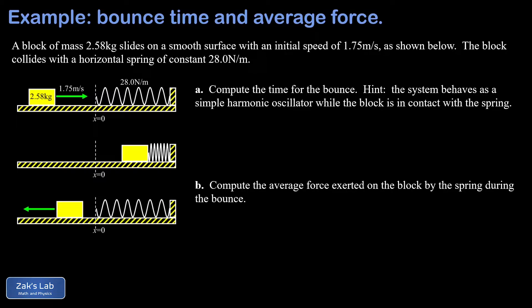So all we have to do for part A is remember the formula for the period of a simple harmonic oscillator, and that's T = 2π√(m/k).